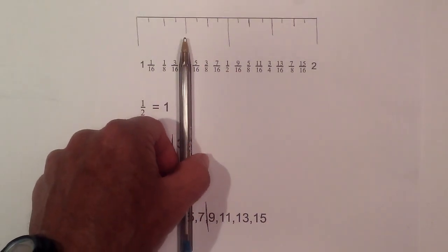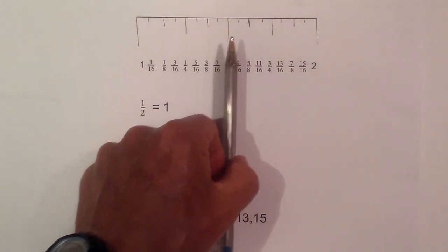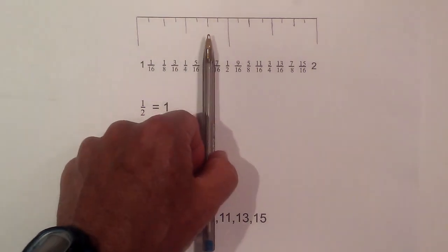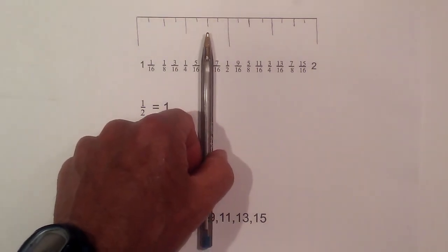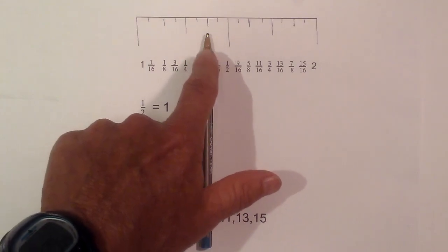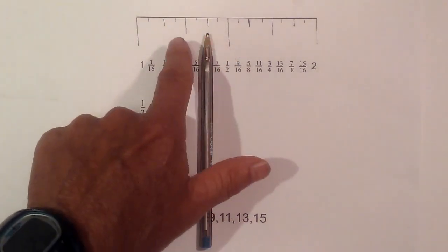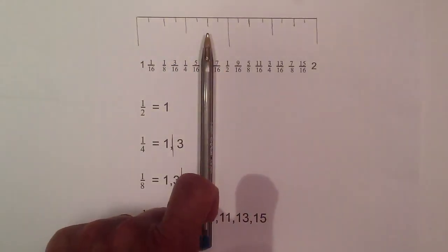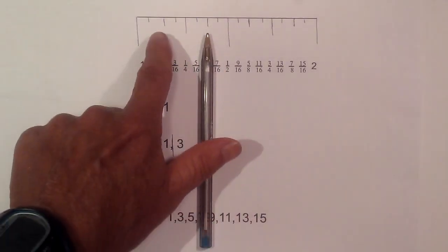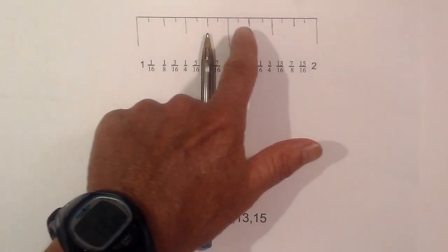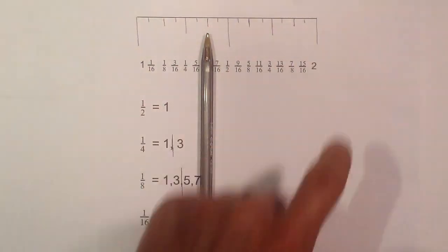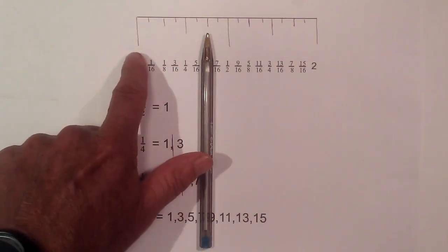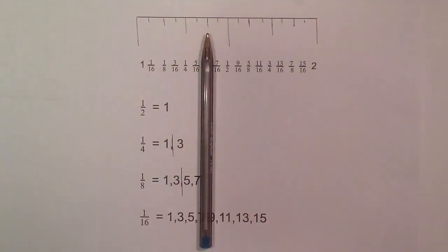How about if we get a measurement right here? Now I know it is the third largest or second smallest. So it is a one eighth. I know the pattern is one, three, five, seven. So I know this would be one and three eighths.